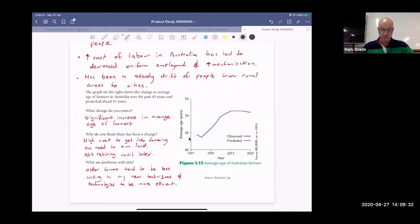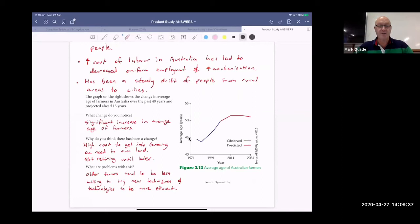The graph on the right shows the change in average age of farmers over the past 40 years. We can see that our average age has increased. And it's actually going down a bit, our average age, because the farmers at the older end, they're retiring. So they're giving that to their sons and their daughters. So we've got our average age dropping down below 50 at the moment. So let's have a look at our questions. What change do you notice? The significant increase in average age of farmers. So they're getting older. Why do you think there's been a change? The high cost of getting into farming. There's a reason why I'm not farming, and that's because I couldn't buy a farm. It's too expensive. Land's very expensive. And unless someone was going to give me a farm, that isn't going to happen.